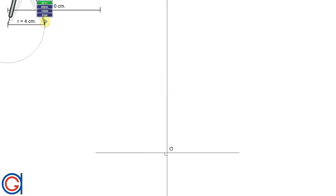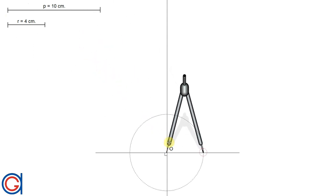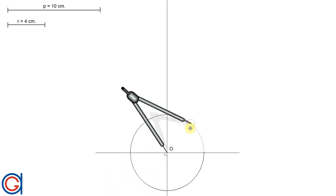Now that we have set up our horizontal and vertical axis, setting our compass to the given radius 4 cm, we set our compass on the origin O and draw a circle as can be seen here.